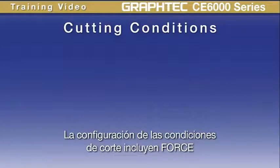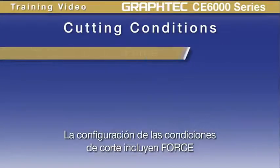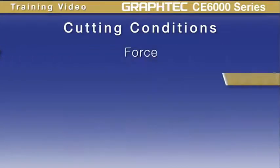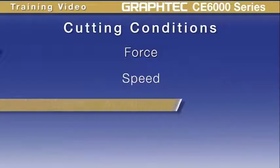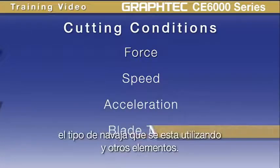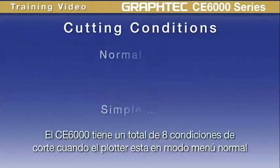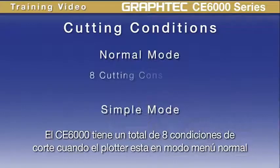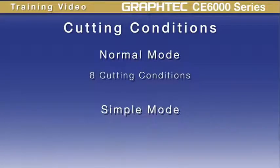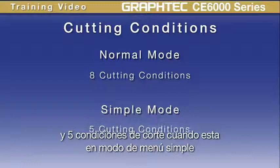The settings within a cutting condition include the force, speed, acceleration, the type of blade that's to be used, and other settings. The CE6000 has a total of 8 cutting conditions when the plotter is in normal menu mode, and 5 cutting conditions when the plotter is in the simple menu mode.